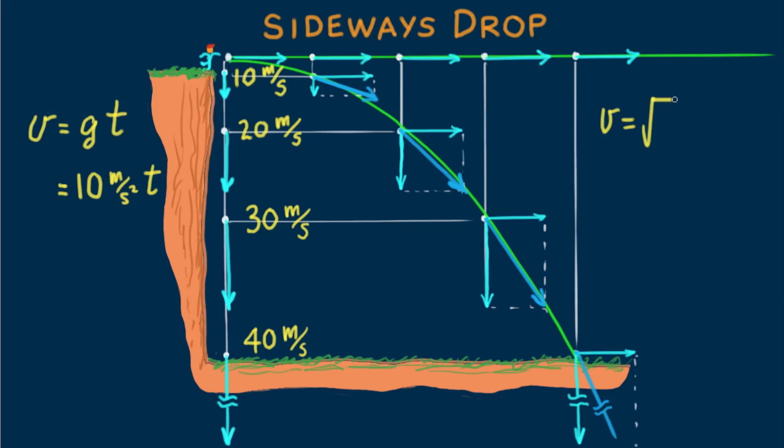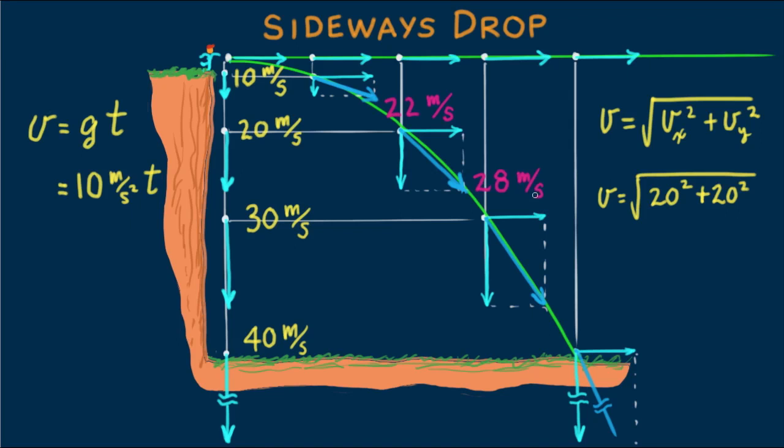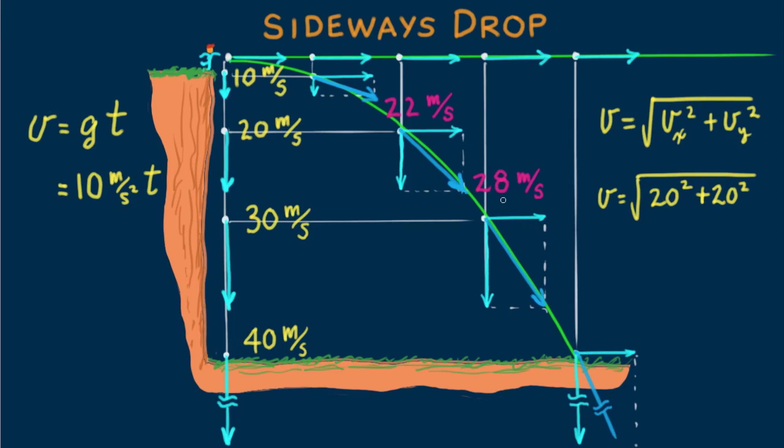To calculate the magnitudes of these velocities, we use the Pythagorean Theorem. V equals the square root of the sum of the components squared. We'll call the horizontal direction x and the vertical direction y. How much is the velocity at the one second position? It's the square root of twenty squared plus ten squared. Your calculator will show you it's about twenty-two meters per second. How much at the two second position? Your calculator will show it's about twenty-eight meters per second. And for the three second position? Your calculator will show it's about thirty-six meters per second. And how fast does the ball hit the ground? Your calculator shows it's very close to forty-five meters per second.